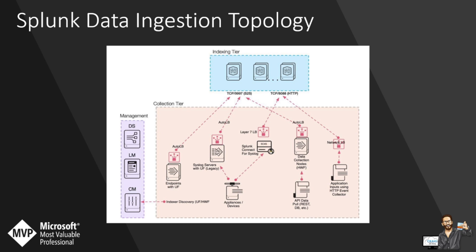Looking at the Splunk data ingestion topology — this has a similar sort of ingestion topology as Sentinel, which we'll look at in a minute. It still has an agent, the Splunk universal forwarder, which goes to the auto-balanced index cluster. You can still deploy syslog servers with Splunk forwarders or Splunk Connect for Syslog. You have direct integration supported for apps and add-ons in Splunk Base. You can use API to pull data at rest into VMs with Splunk forwarders, or you can also create custom connectors with Python.